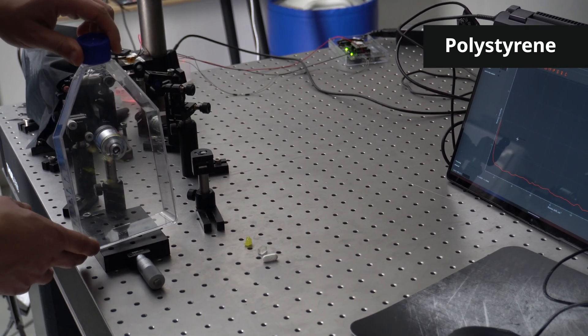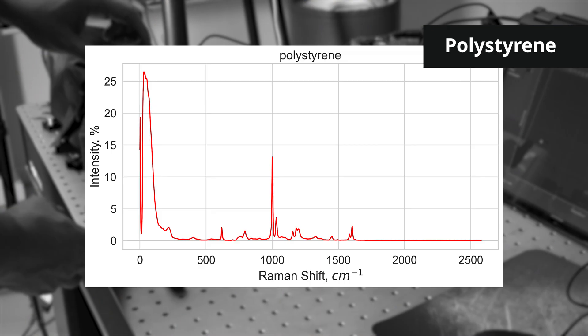Now let's take this polystyrene bottle and measure it. As you can see, the setup allows to measure samples of different shapes and sizes. We slightly adjust the focus to improve the signal. Here you can see a typical polystyrene spectrum with an intense 1001.4 wave numbers Raman line.